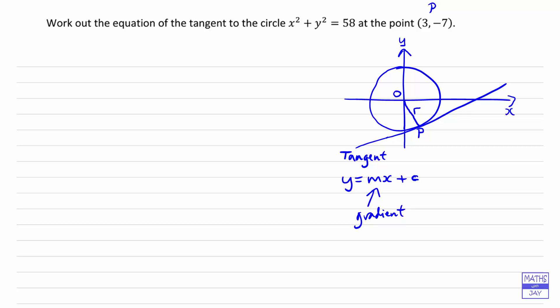We want the gradient of the tangent. In order to find it, we're going to find the gradient of the radius line — the line OP. So we've got this line going from the origin down to the point P. If we draw a triangle around that, this is our radius line. To get from O down to P is going down seven, so negative seven, and then going across — because P has coordinates (3, -7) — that must be three. So we now know the gradient of the radius line; let's call that m1. So m1 is negative seven divided by three.